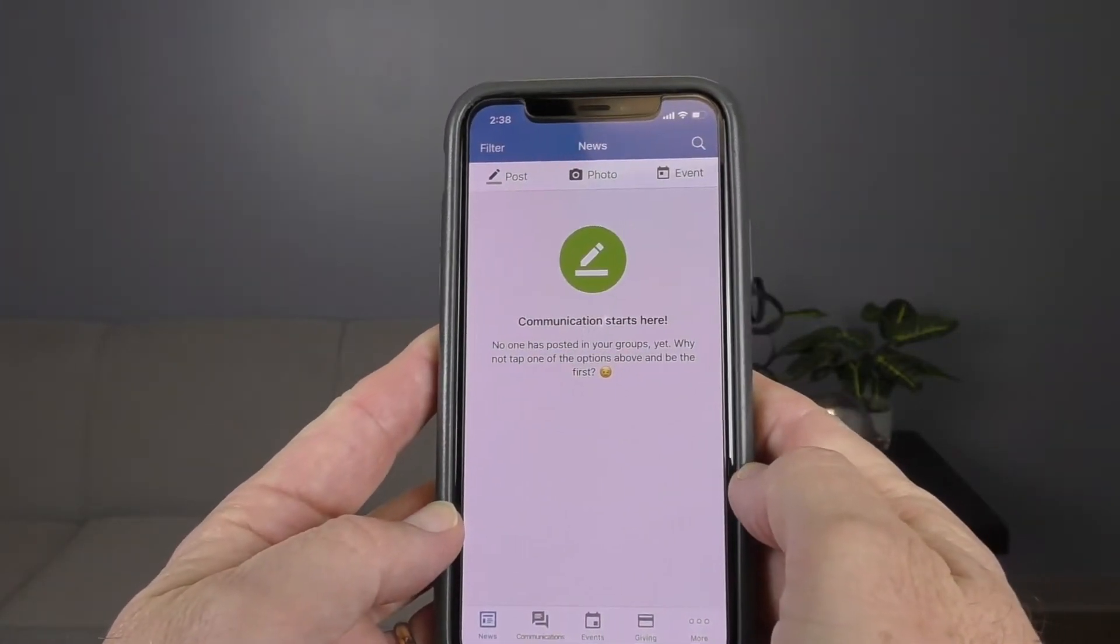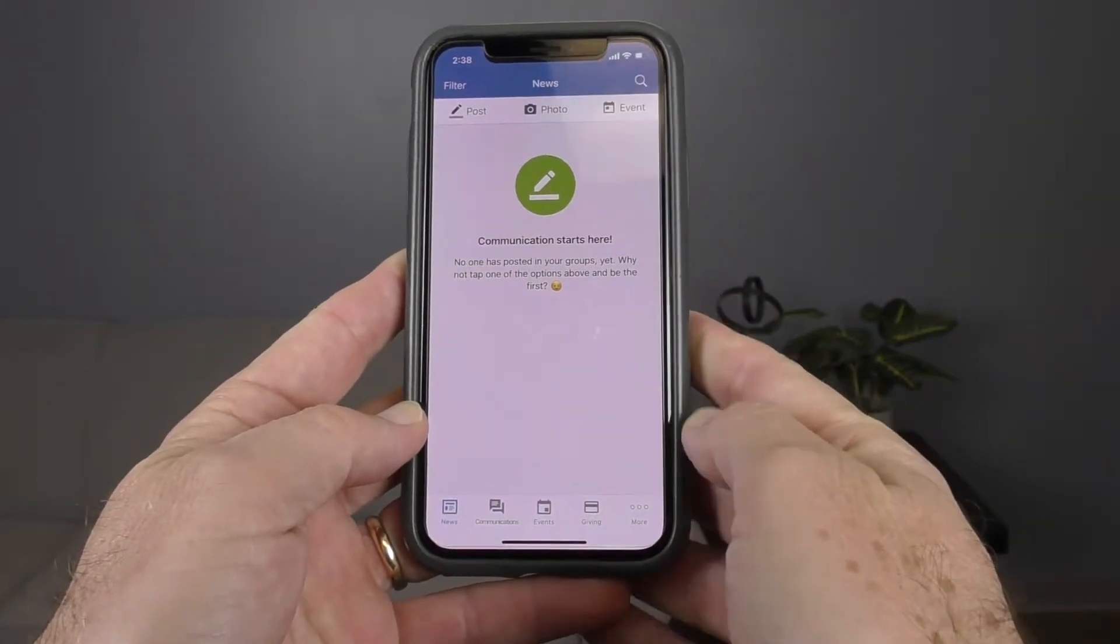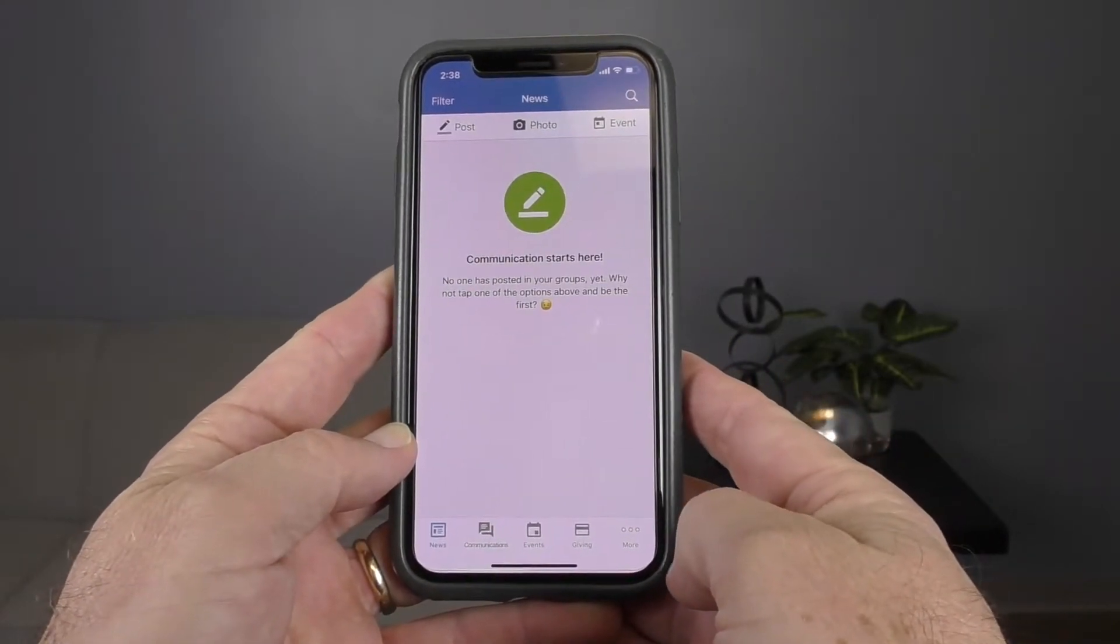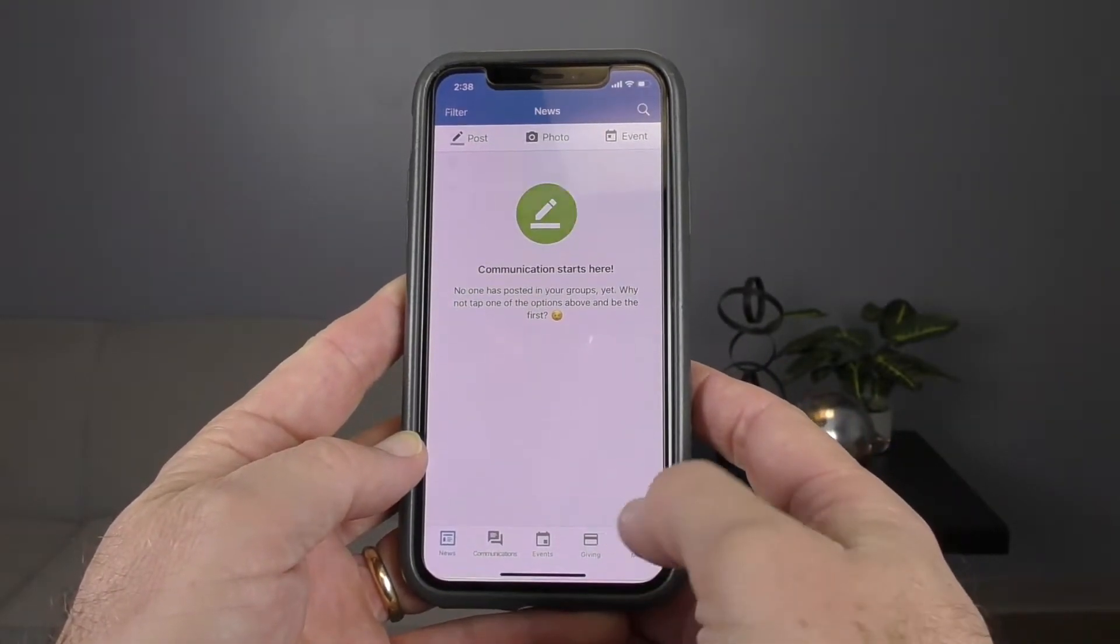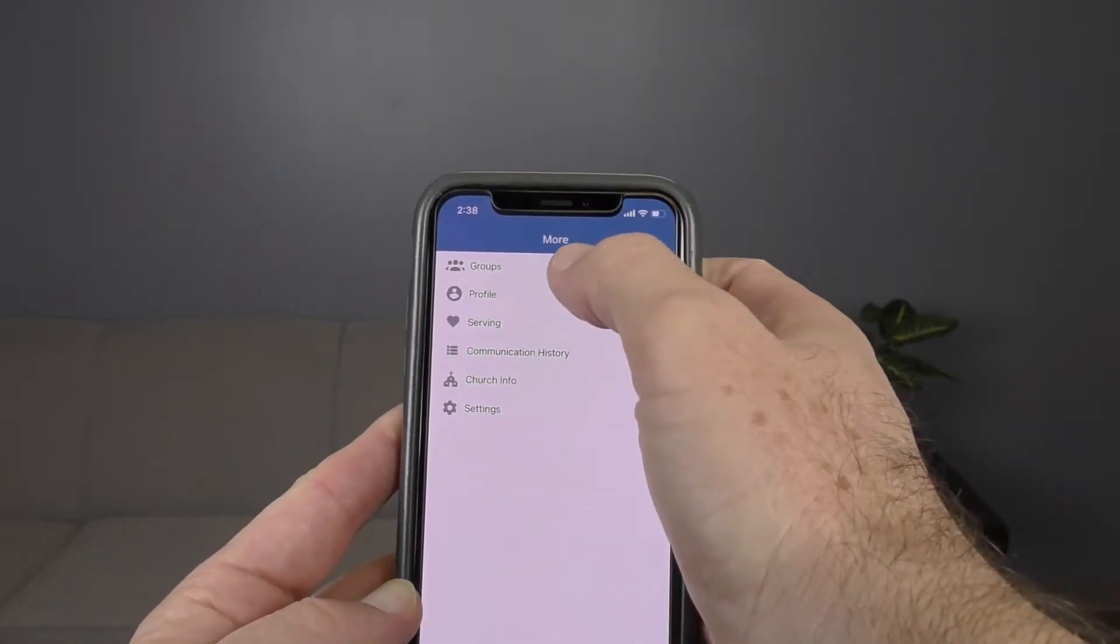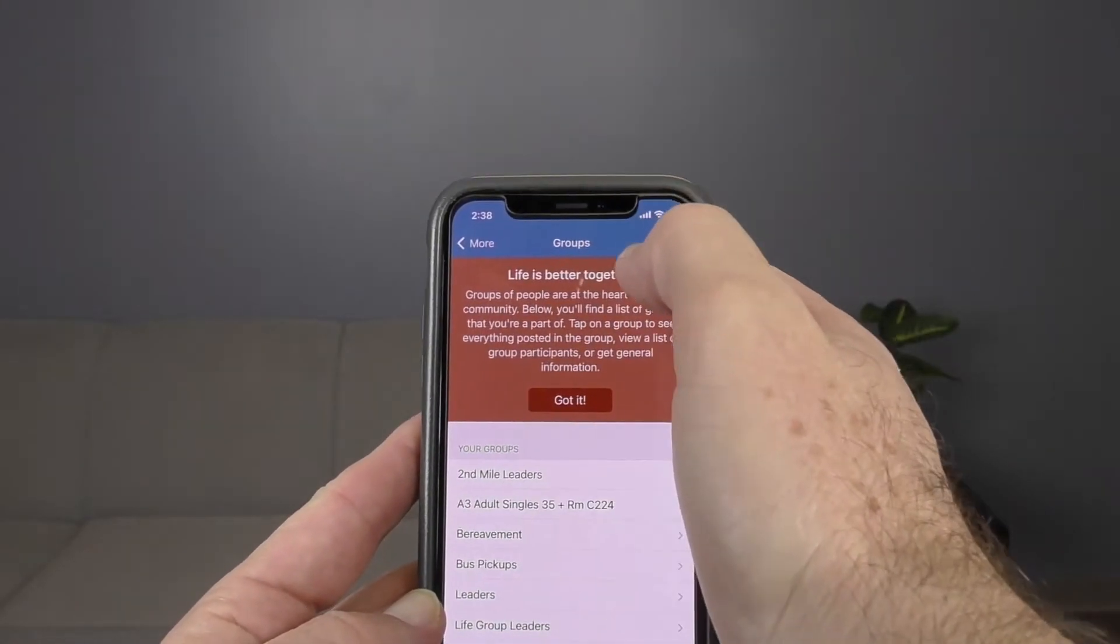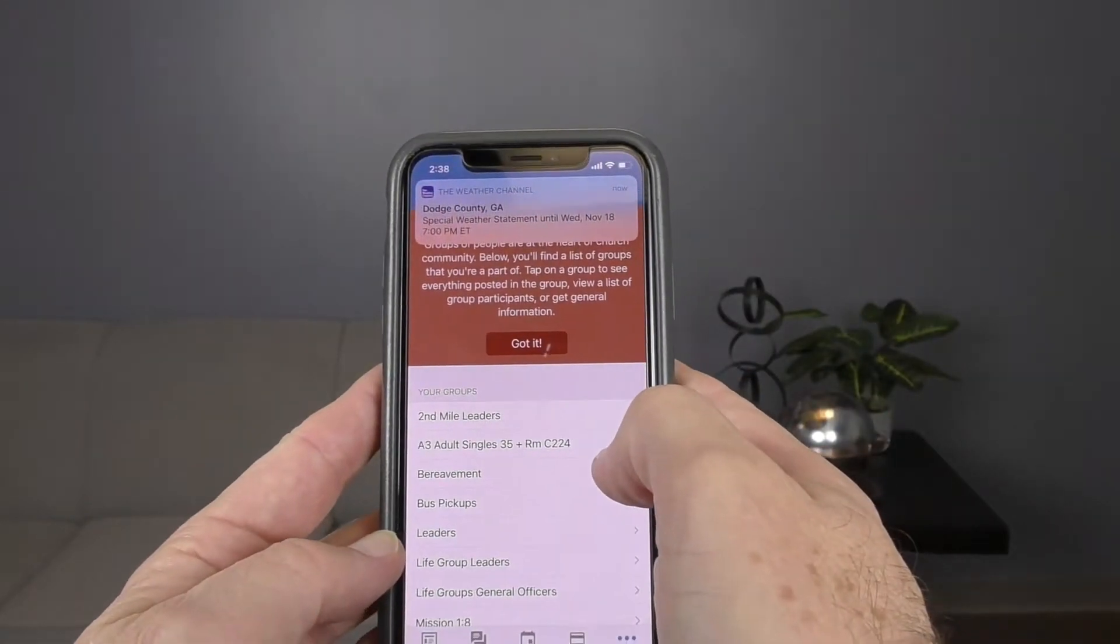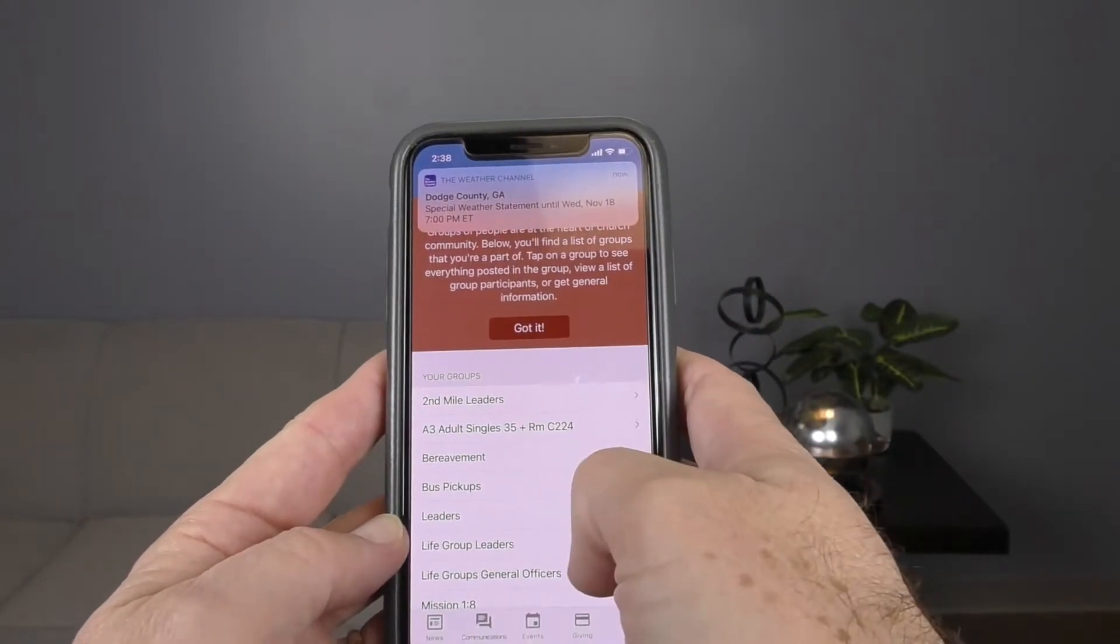Notice down here at the bottom it has a section that says 'more,' and you want to touch that more section. Then you want to go to 'groups'—see groups here.